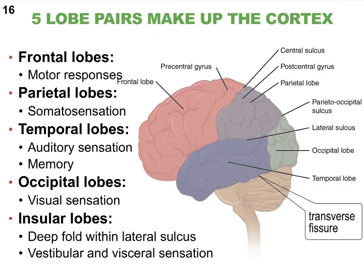Let's point out the five pairs of lobes that make up the cerebral cortex. The names are pretty easy because they correspond to the major skull bones: the frontal, parietal, temporal, and occipital. And then there is one pair of lobes called the insular lobes that have a more unique name, located very deep within the cerebrum.